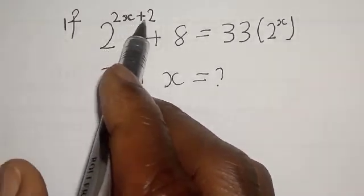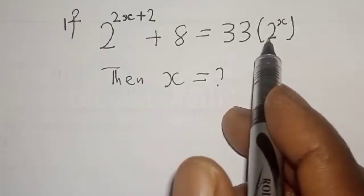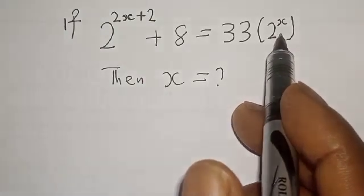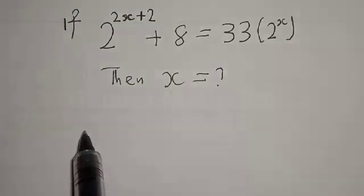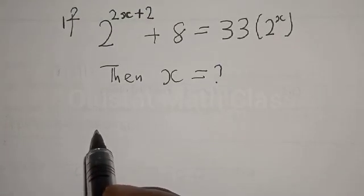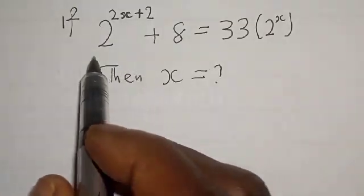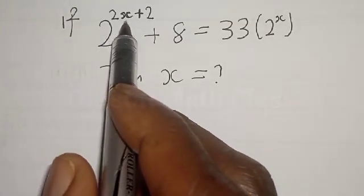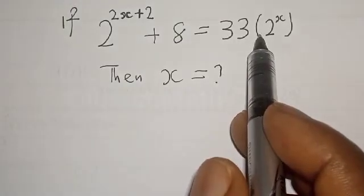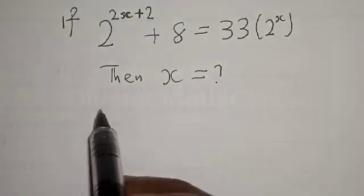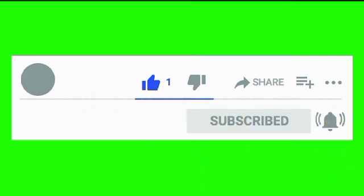If 2 raised to power 2x plus 2 plus 8 is equal to 33 into 2 raised to power x, then find the value of x. Hi everyone, welcome to my class. In this class we want to look at how we can quickly solve this exponential equation: 2 raised to power 2x plus 2 plus 8 is equal to 33 into 2 raised to power x.